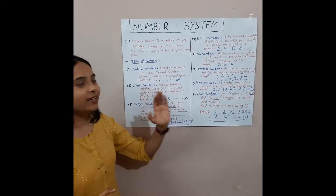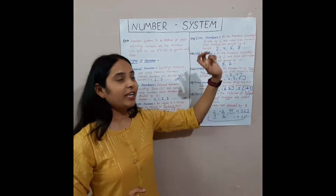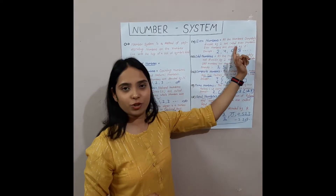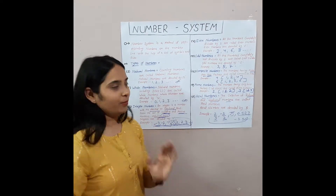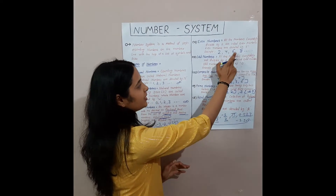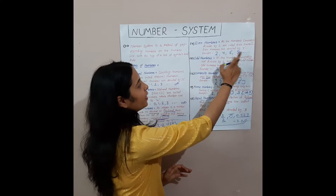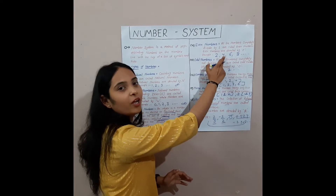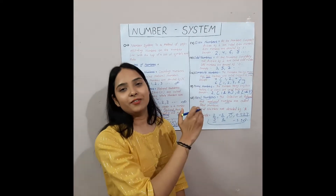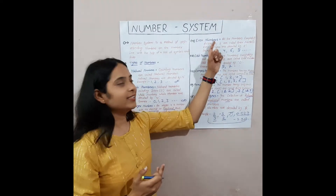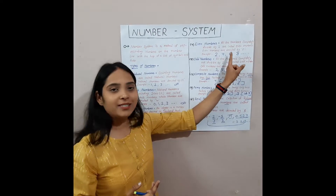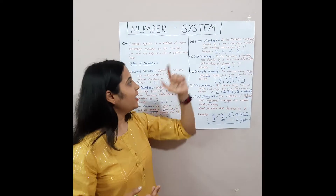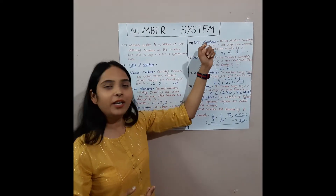Let's move to the next number: even numbers. All numbers completely divisible by 2 are called even numbers. For example: 2, 4, 6, 8. Take the number 4 — 4 is completely divisible by 2, so we can say 4 is an even number. The number 6 is also completely divisible by 2, so 6 is also an even number.